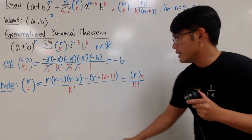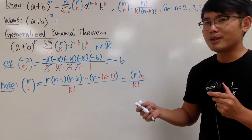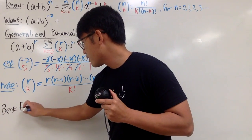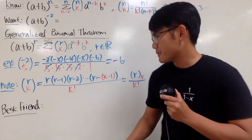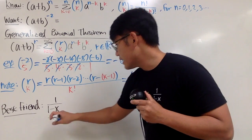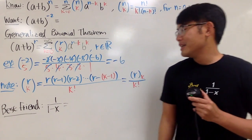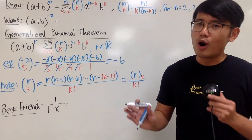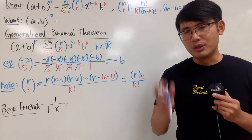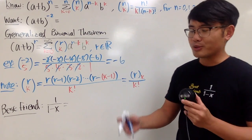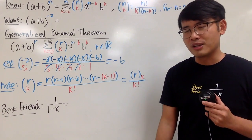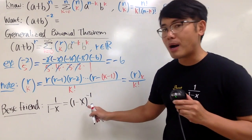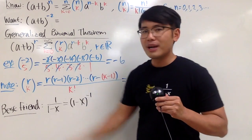Let's use our best friend as an example. Recall 1 over (1 minus x), which we can write as (1 minus x) to the negative 1 power. Here, a is 1, b is negative x, and r is negative 1. So we get the sum from k equals 0 to infinity of (negative 1 choose k) times 1 to the (negative 1 minus k) power — which is always 1 — times (negative x) to the k.